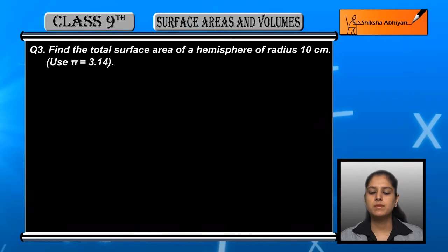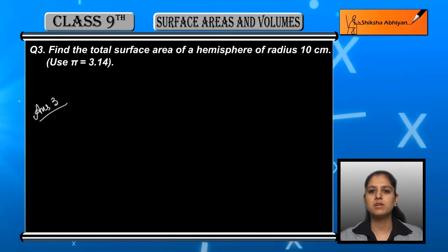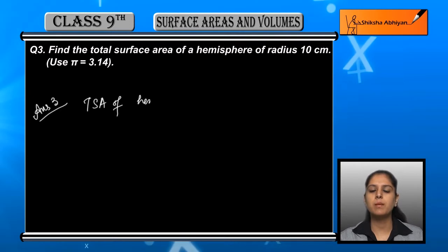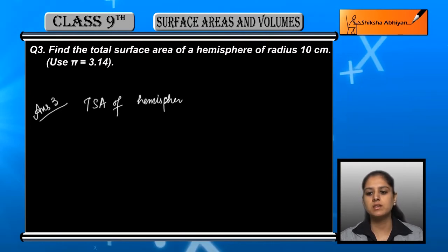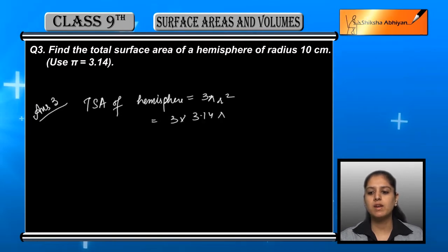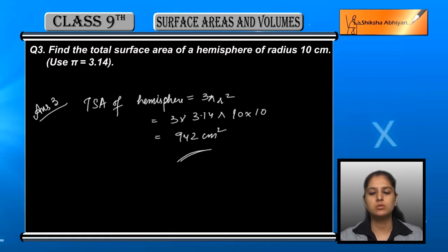The total surface area of a hemisphere equals curved surface area plus the area of the base, which gives 3πr². Substituting the values: 3 into 3.14 into 10 into 10, which is equal to 942 centimeter square.